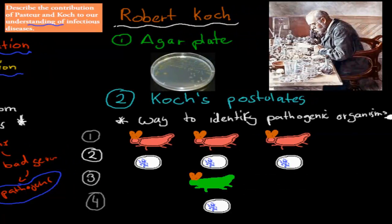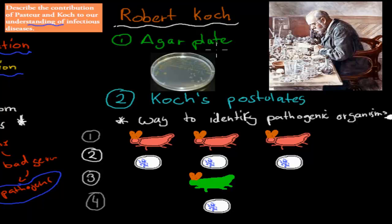We also have to talk about Robert Koch. Now I'm German and I insist you practice saying 'Koch' - Australians love to say 'Koch' instead of 'Koch', but the correct pronunciation is 'Koch', which is actually German for 'cook'. Robert Koch had two important contributions: first, he came up with the idea of the agar plate, which is important when it comes to growing microbes. And the other one was Koch's postulates, which you need to know about and how they relate to infectious disease.